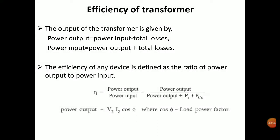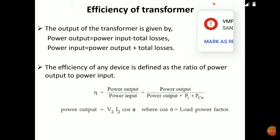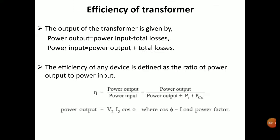Good morning everybody. Today I'm going to explain the efficiency of a transformer. The power output is equal to power input minus total losses, and power input is equal to power output plus losses. The efficiency of any device is defined as the ratio of power output to power input.